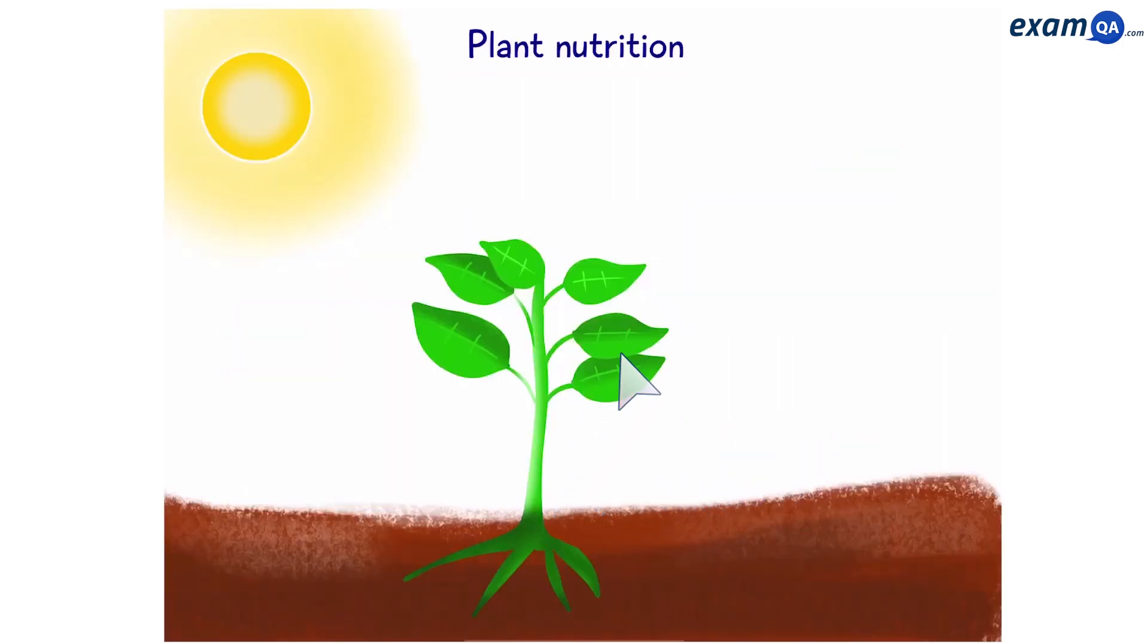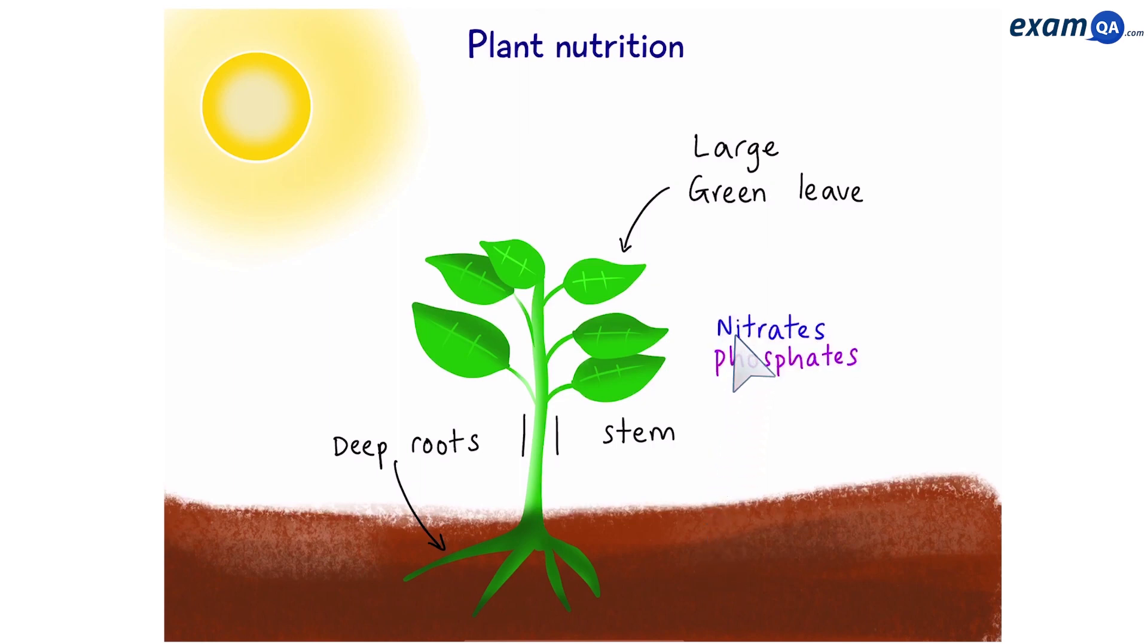Now here we have a plant, which has nice large green leaves, a strong stem, and deep roots. So, in addition to photosynthesis, the plant also needs to get minerals from the soil. These include nitrates, phosphates, and potassium, all which are essential minerals that are found in the soil for the plant to absorb.